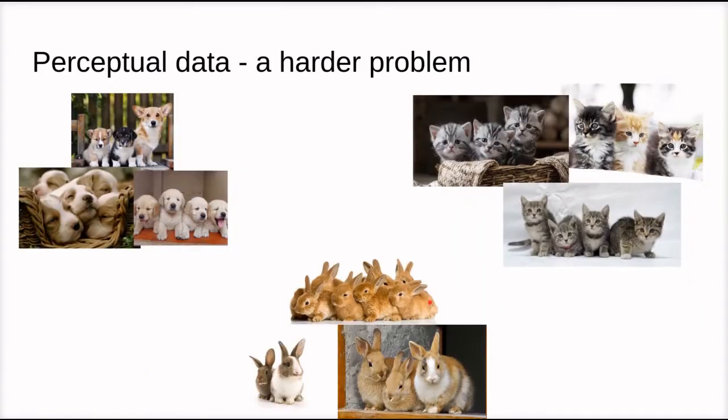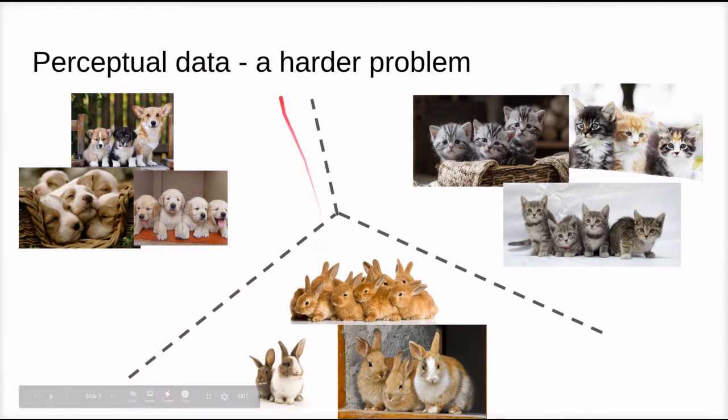Here we have a much more complex dataset where we want to classify the visual data into categories of puppies, kittens, and bunnies. But it's not easy to determine how we should draw straight lines in this space of possible images—hyperplanes, really—in the space of possible images that let us draw these decision boundaries.